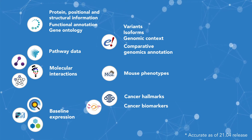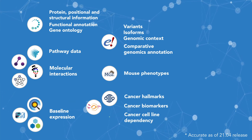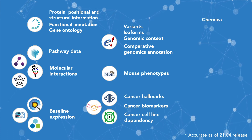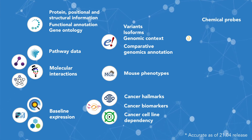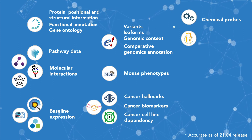We also ingest data on CRISPR-Cas9 cancer cell line dependency from our very own Project Score. We have a number of data sources for chemical probes, including the Structural Genomics Consortium, the Chemical Probes Portal, the Open Science Probe Project, and ProbeMiner.